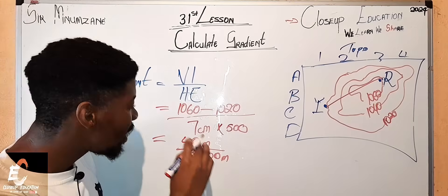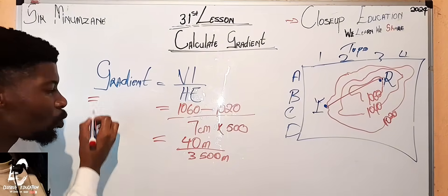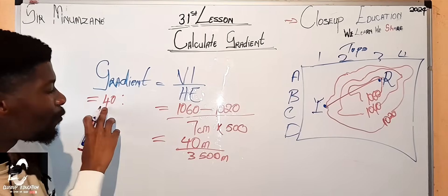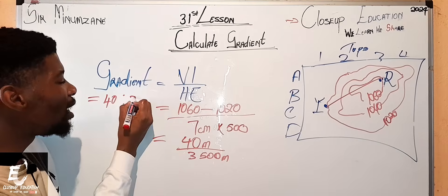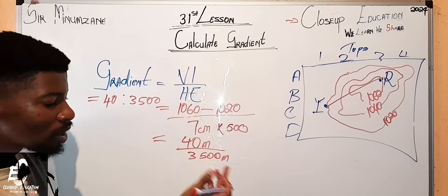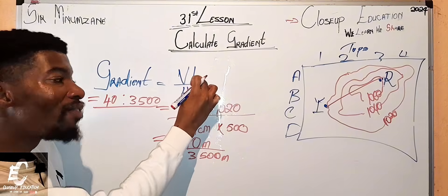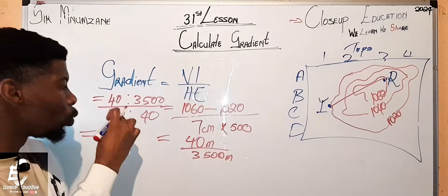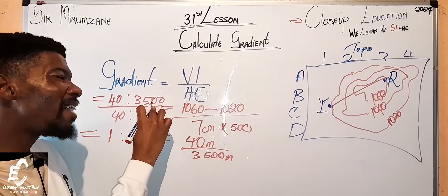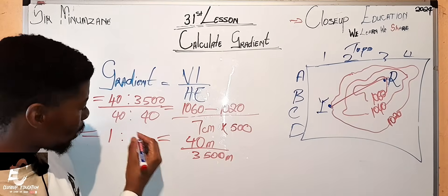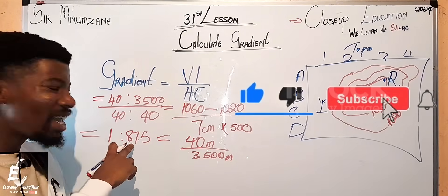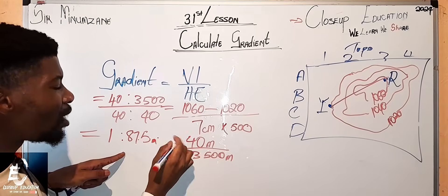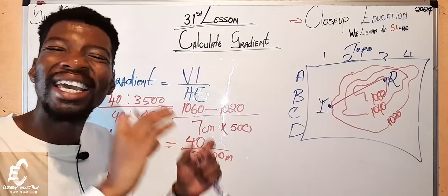The answer has to be in ratio form. You say 40 is to 3,500. But you do not end there. You divide both sides by the vertical interval: 40 divided by 40, which is 1, is to 3,500 divided by 40, which is 87.5. So the answer is 1 is to 87.5. You do not have to write the meter unit here because the answer has to be in ratio form.